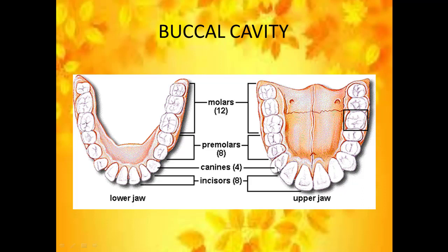Next, behind the incisors you have the canines. The canines are sharp and pointed teeth used for cutting and tearing the food materials. There are two canines in each jaw. Behind the canine you have the premolars. They have a larger surface area compared to the canines or incisors, and this larger surface area is used for grinding or chewing the food materials. Four premolars are present in each jaw, so we have around eight premolars in our buccal cavity.